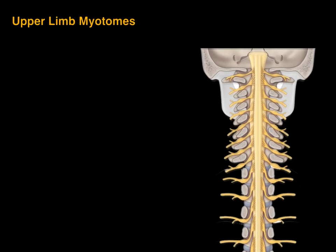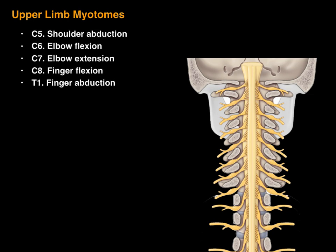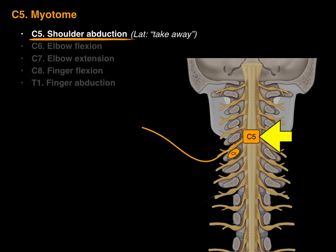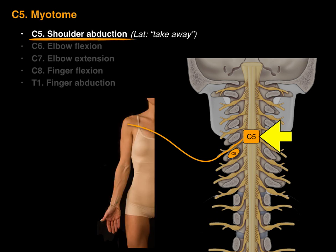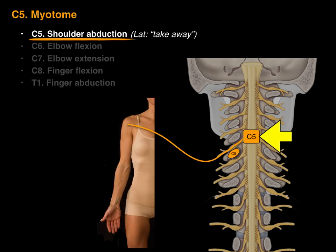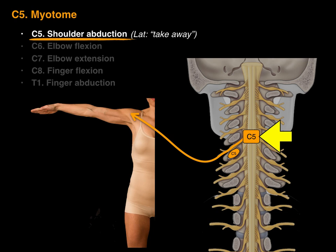Let's go through each upper limb myotome, starting with the C5 myotome, which is shoulder abduction. Abduction is Latin for to take away. There's our C5 spinal cord level and C5 vertebra, and we have a motor neuron that goes out and produces that movement — abduction of the glenohumeral joint, or shoulder abduction.